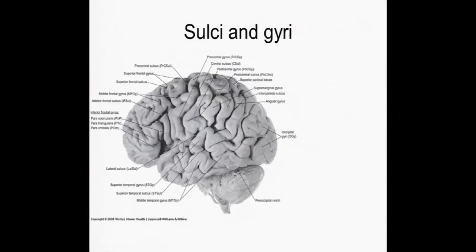Here are the major sulci. Sulci meaning the involutions of the brain, and gyri meaning the bumps. It's really hard — in the textbooks they are always nice, but when you go from human brain to human brain, you'll find it's actually hard to find some of these. But the most obvious are the central sulcus, which is this big line right here, and then the lateral sulcus, which separates the temporal lobe from the frontal lobe.